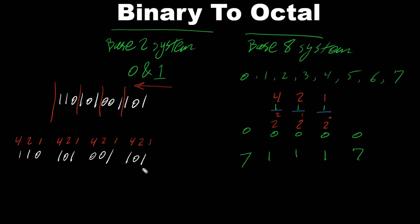Within each group of 3 bits: 2 to the power of bit position 0 is 1, bit position 1 is 2, and bit position 2 is 4. This repeats for every group, and we can see these decimal values laid out for each of our groups.